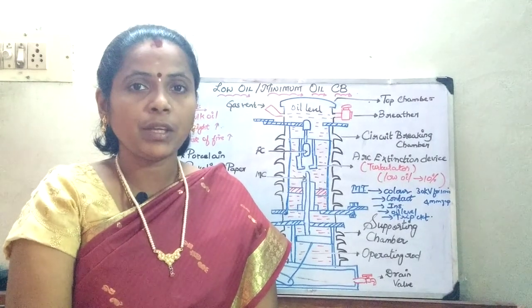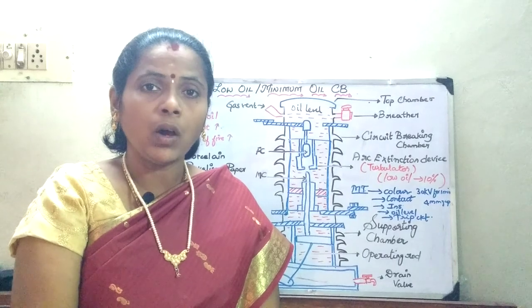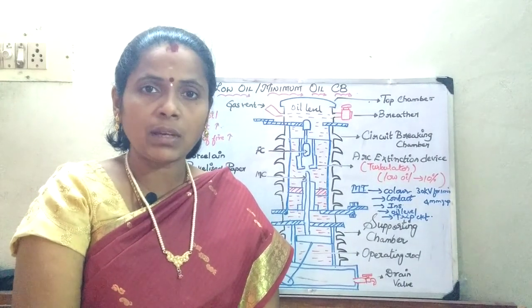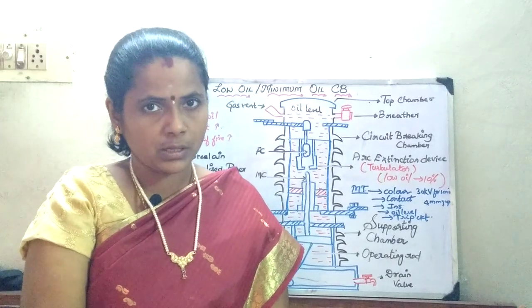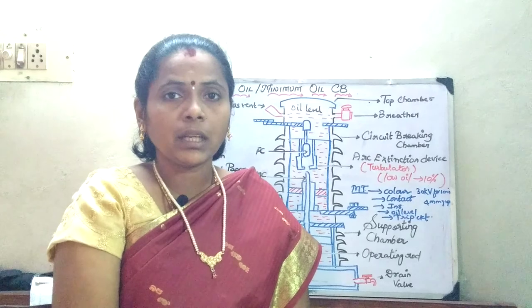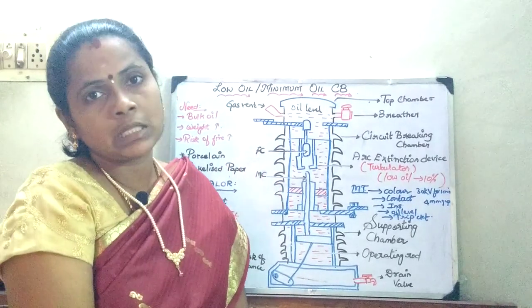In the last session we have seen about the bulk oil circuit breaker where the oil was used for two purposes: for arc quenching as well as for insulation. Now in today's session we will be seeing what is the need to go in for low oil or minimum oil circuit breaker.